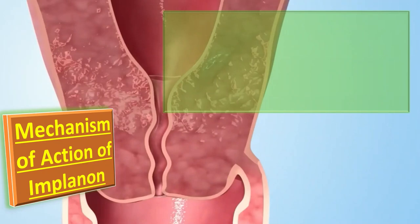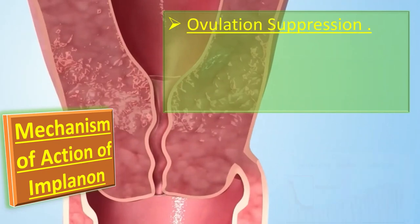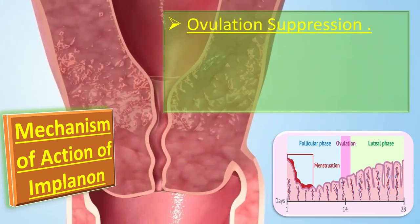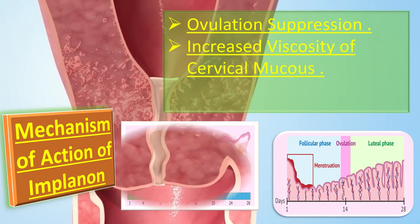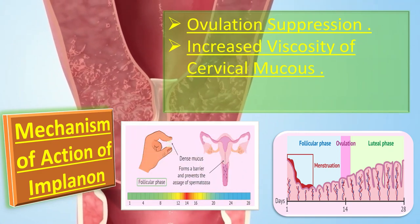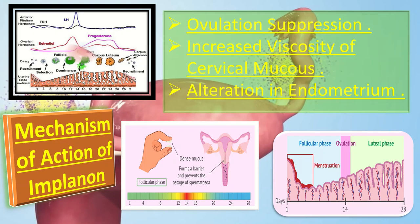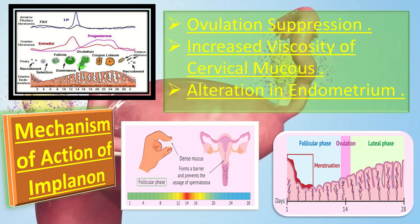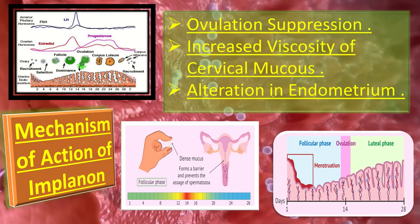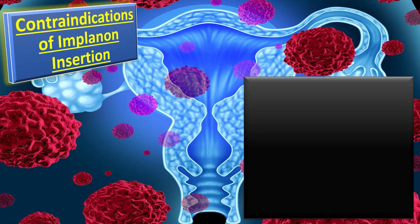The mechanism of action of Implanon: first, it causes ovulation suppression; secondly, it increases the viscosity of cervical mucus; thirdly, it causes alteration in the endometrium. By these three methods it provides contraception.